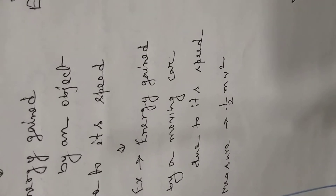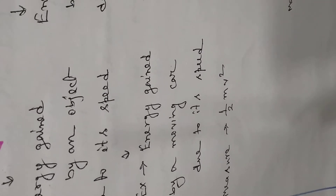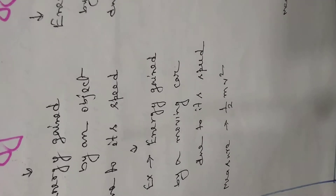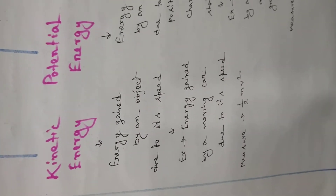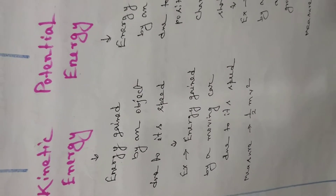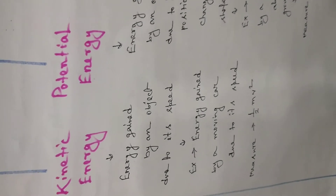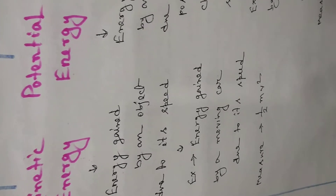This kind of energy is known as kinetic energy, and the measure of kinetic energy is half mv², where m is the mass of the object and v is the speed of that object. So if we know the mass and speed of an object, we can calculate its kinetic energy. Suppose a car of mass m and speed v is running on a road — the measure of its kinetic energy will be half mv².